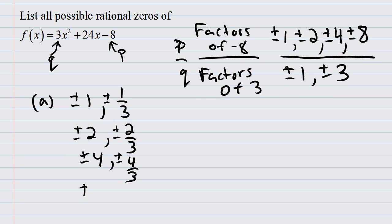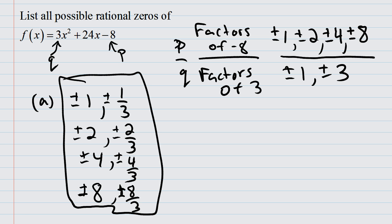Plus or minus 4 over 1, plus or minus 4 over 3. And finally, plus or minus 8 over 1, plus or minus 8 over 3. Sometimes there's overlap, but in this case there aren't any. All possible rational zeros are in this list here.